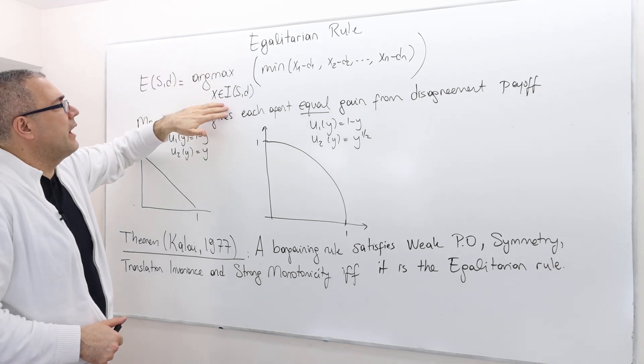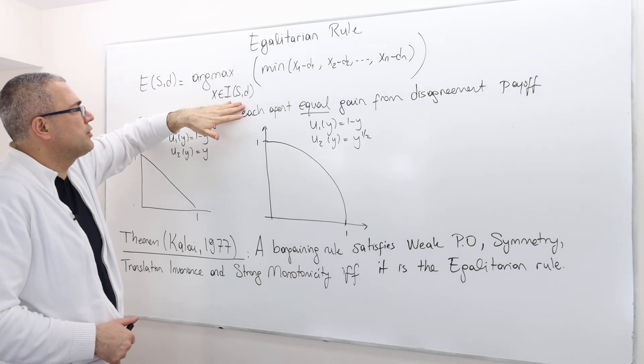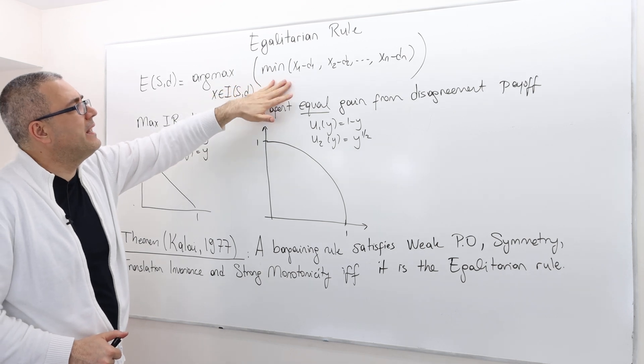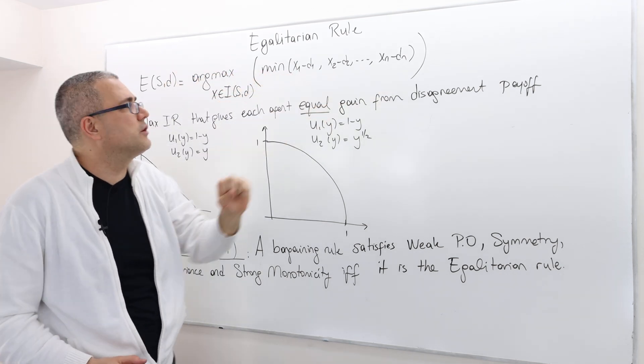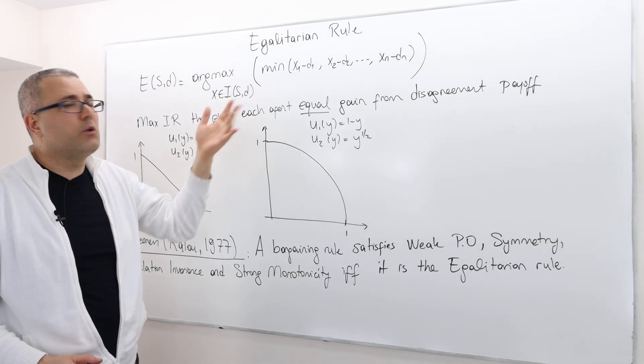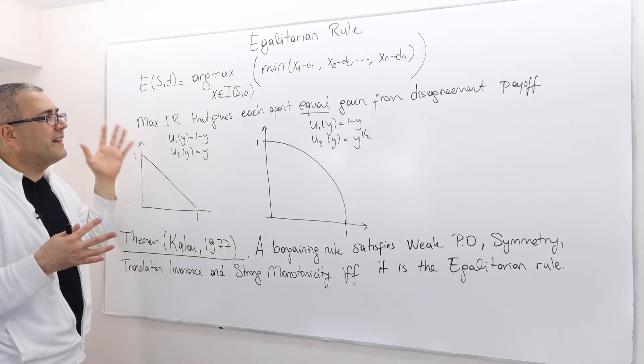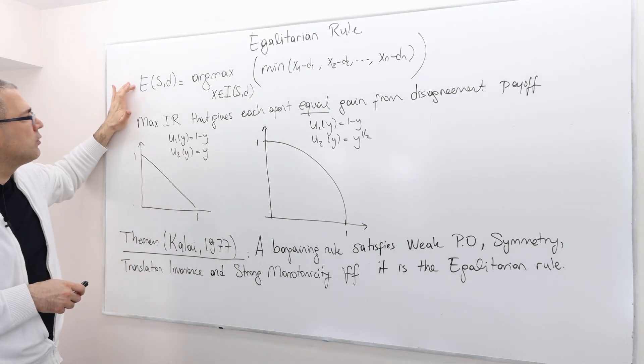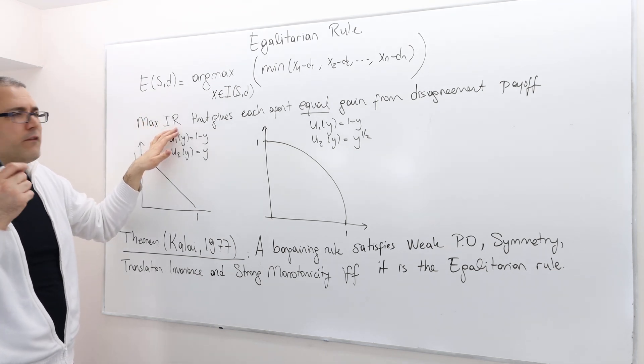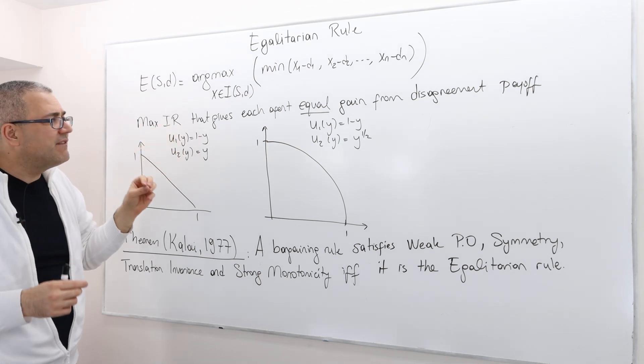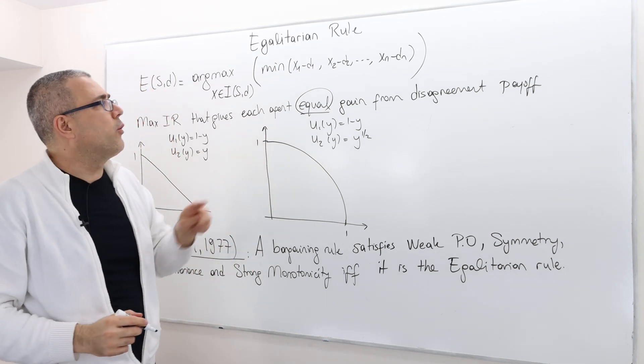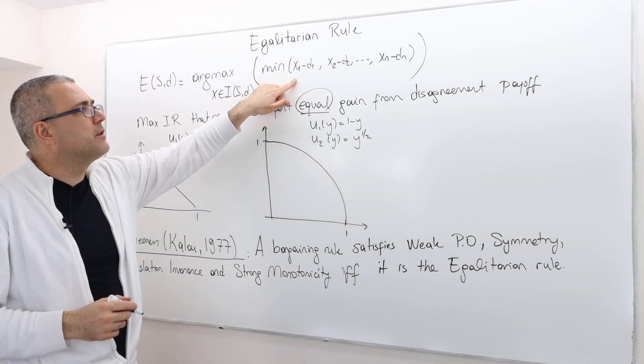So for any bargaining problem SD, the egalitarian rule is defined as follows. It's argmax, so x's, the payoffs are coming from individual irrational, the set of individual irrational and feasible payoffs. And it basically maximizes this min function. So it's very similar to Kalai-Smorodinsky. The only difference is we don't have the aspiration point.